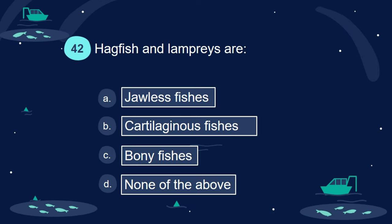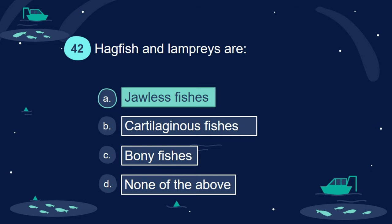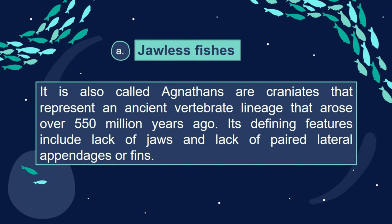Question 42. Hagfish and lampreys are jawless fishes. They are considered among the most ancient vertebrates, bonded 550 million years ago. Their defining features include lack of jaws and lack of paired lateral appendages or fins.